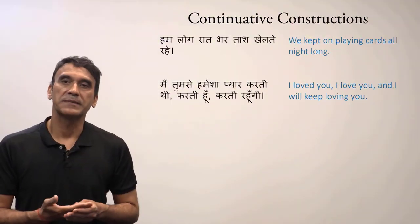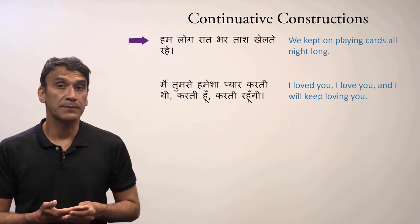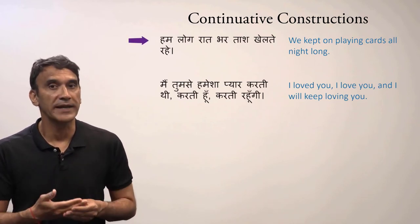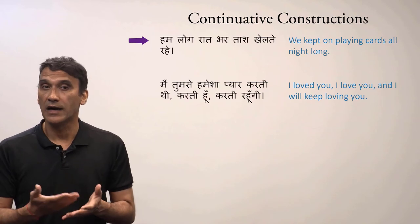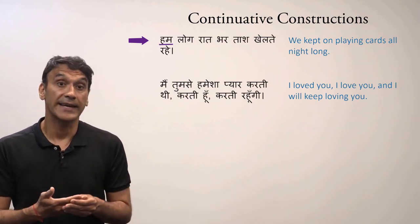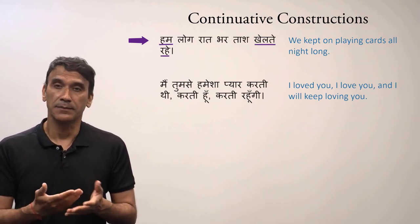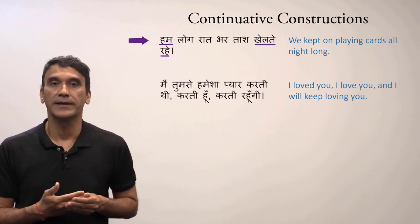Let's take some example sentences. HUM LOG RAAT BHAR TASH KHELTE RAHE — we kept on playing cards all night long. HUM here is masculine plural, which is why we use KHELTE RAHE, the masculine plural form, meaning 'kept on playing.'